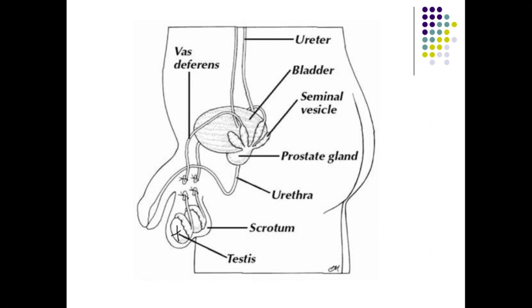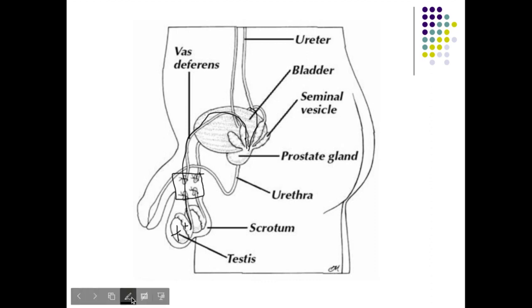Looking at the diagram, the testes sit outside the body, and the epididymis can be seen wrapped around them. In this image, the person has had a vasectomy. Vasectomies do not affect the actual production of sperm — they simply cut the duct system so sperm can't exit the body. Sperm is stored in the vas deferens, and when ejaculation occurs, it makes its loop up around the bladder, where the right and left vas deferens converge at the ejaculatory duct.